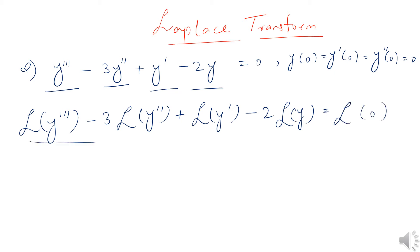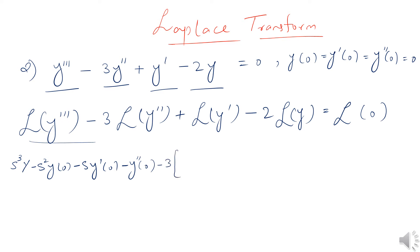The Laplace transform of y triple prime, as found in our previous lecture, is s cubed Y minus s squared y(0) minus s y prime(0) minus y double prime(0). Minus 3 times the Laplace of y double prime, which is s squared Y minus s y(0) minus y prime(0).